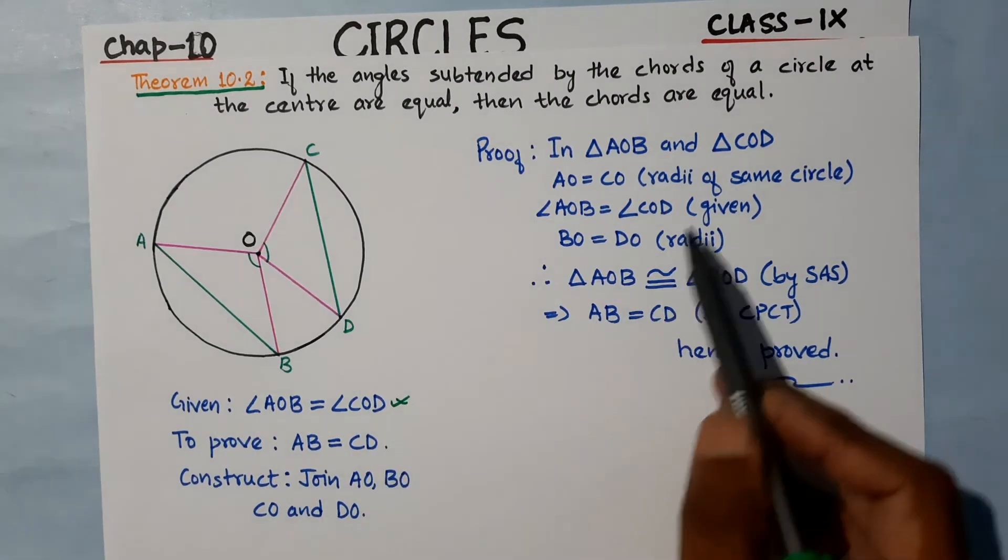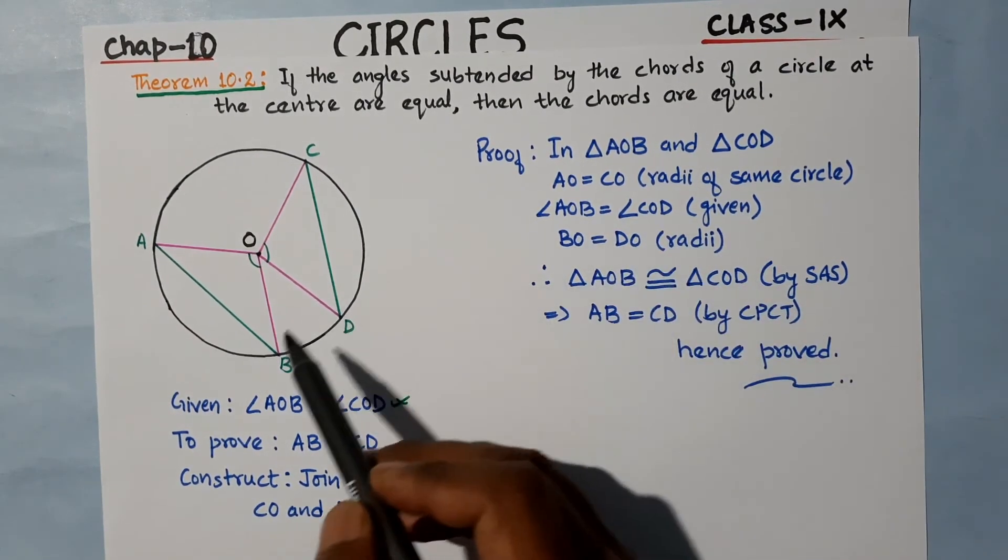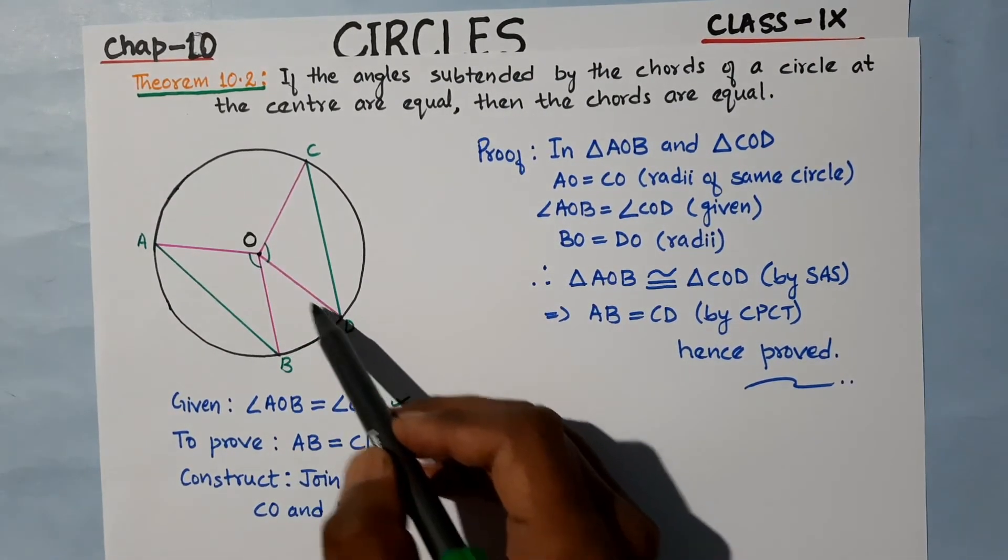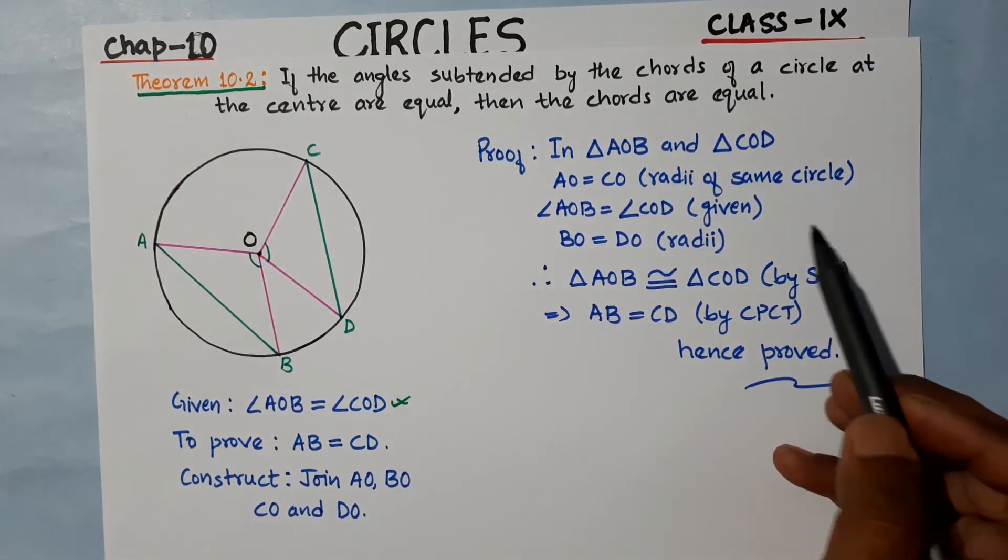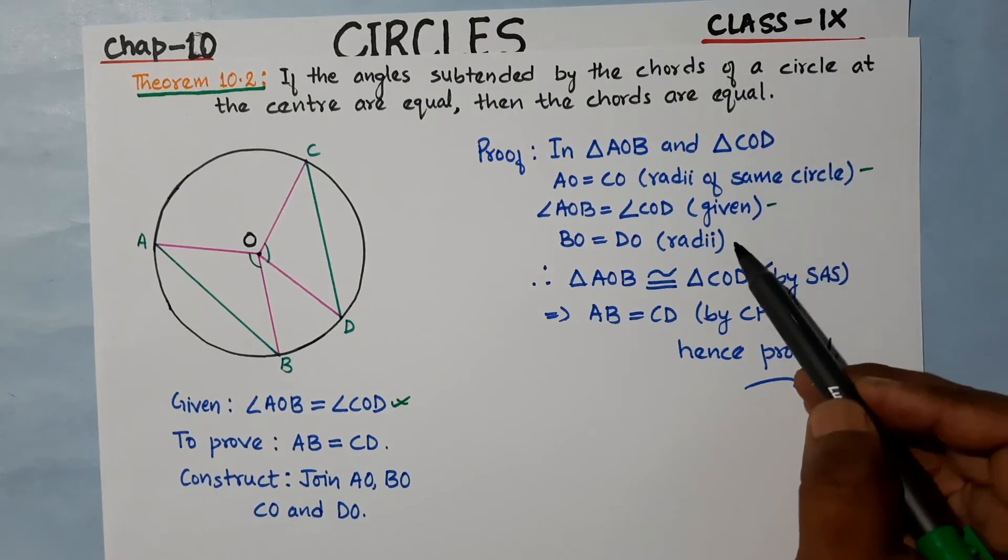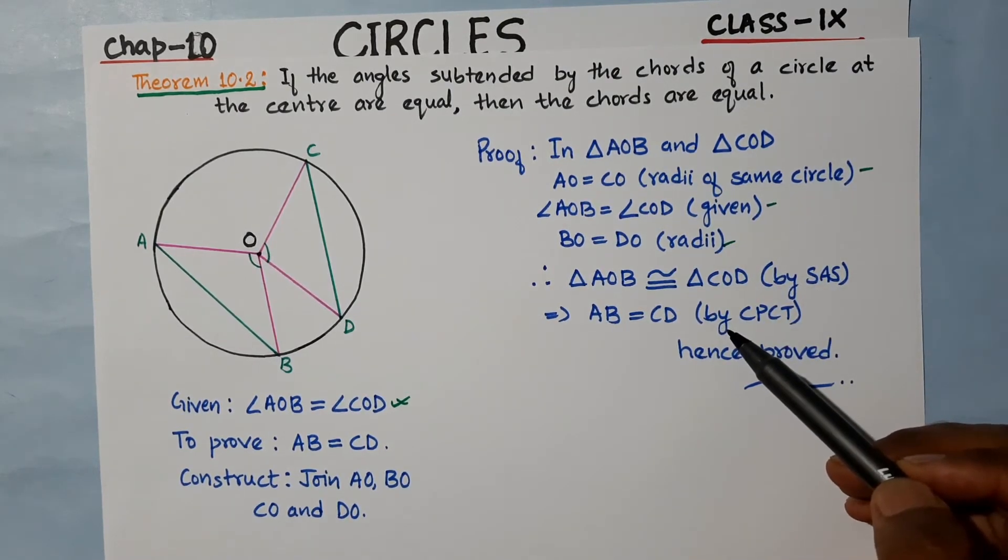Third, BO equals DO - these are radii of the same circle. So we have three equal conditions.